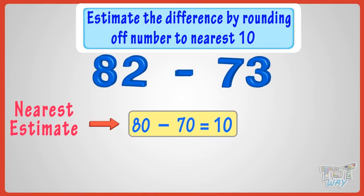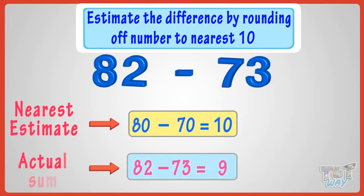Now, let's compare the estimate with the actual answer. 82 minus 73 is 9. So, your estimate is very near. Our estimate was 10 and the actual difference is 9. Good!